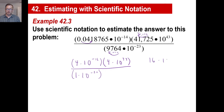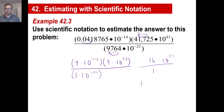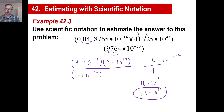4 times 4 is 16. 10 to the negative 16 times 10 to the 47, over 10 to the 31. We'll just say it's 16. We're going to move the negative 20 up, which turns into positive 20. So we can say 16 times 10 to the 51st — or if you wanted to, you could put 1.6 times 10 to the 52nd. You could put 2 times 10 to the 52nd — it's close enough. That's our estimate.